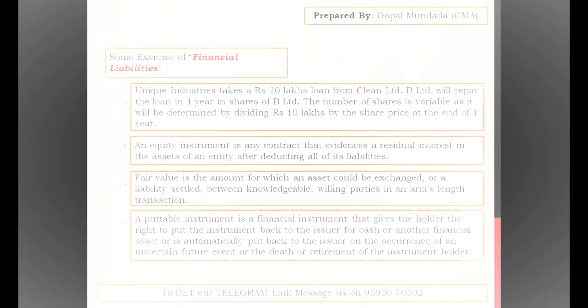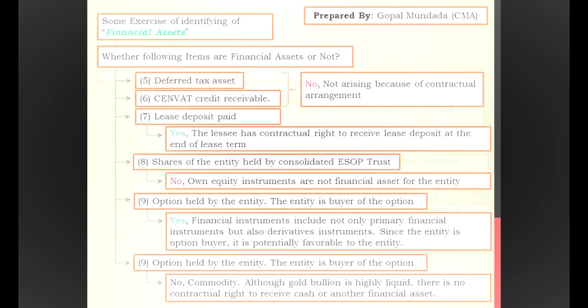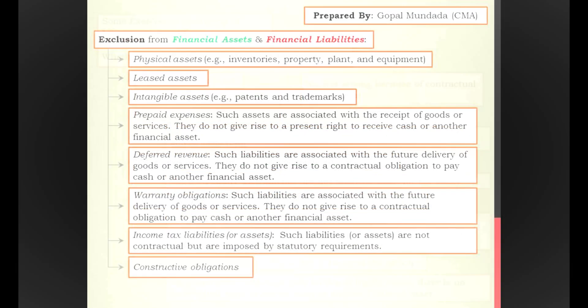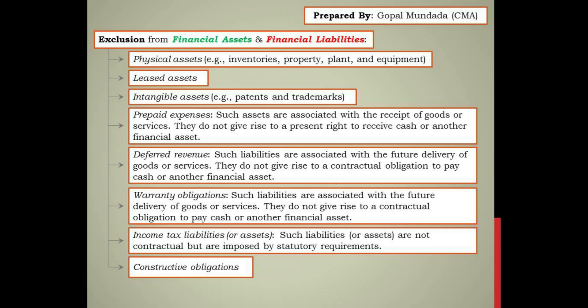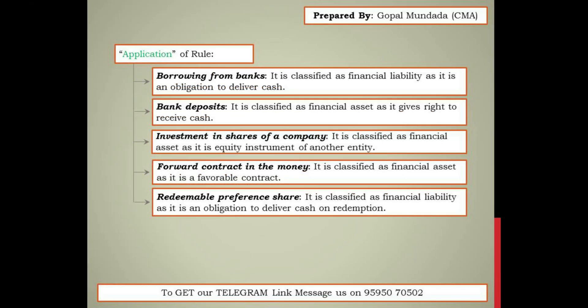All the definition parts are finished - only these four definitions are covered under Ind AS 32. Some examples regarding financial assets and financial liabilities are provided in the CMA study material. I have also covered some exercises in my notes - please study those to properly answer CMA examination questions. I have also covered exclusions from financial assets and financial liabilities, and application rules are provided in the study material. Download the notes using the link in the description box.